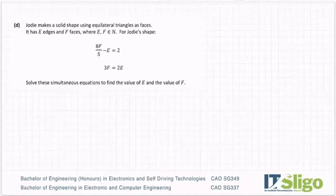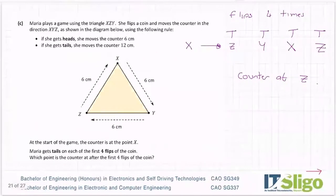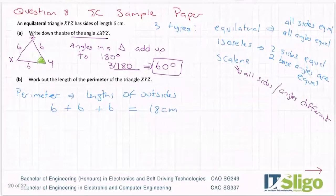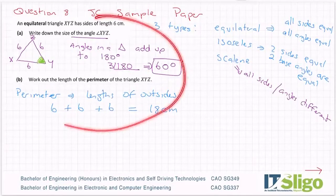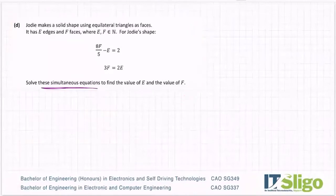Jody makes a solid shape using equilateral triangles as faces. It has E edges and F faces, where E and F are elements of N — in other words, whole numbers. For Jody's shape: EF over 5 minus E equals 2, and 3F equals 2E. Solve these simultaneous equations to find the value of E and the value of F. This is a difficult question because it mixes area and volume, probability, and now a bit of algebra with simultaneous equations — the question really does mix a load of chapters together.